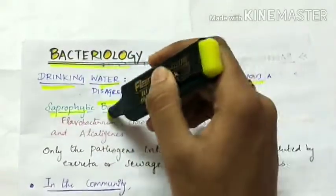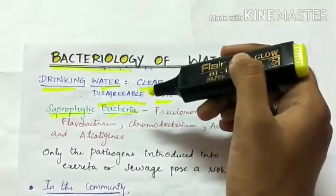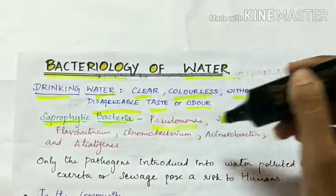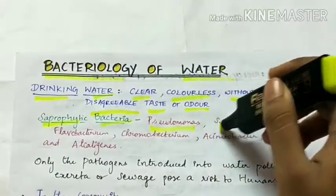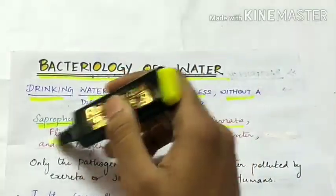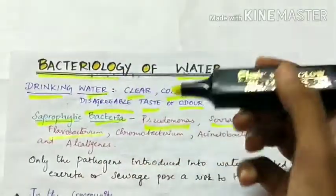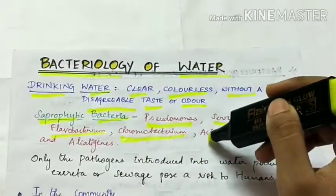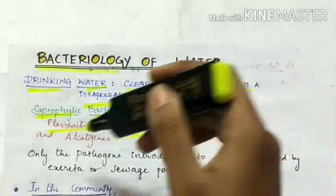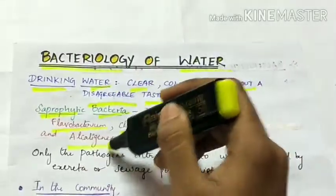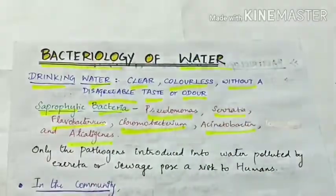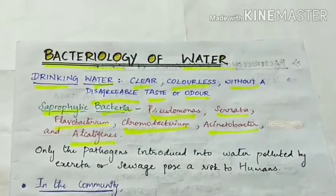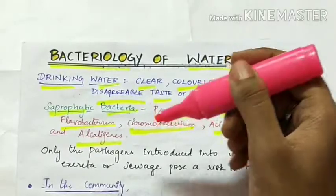Some of the saprophytic bacteria present in drinking water include Pseudomonas, Serratia, Flavobacterium, Chromobacterium, Acinetobacter and Alcaligenes. They are saprophytic, so they do not cause any disease.